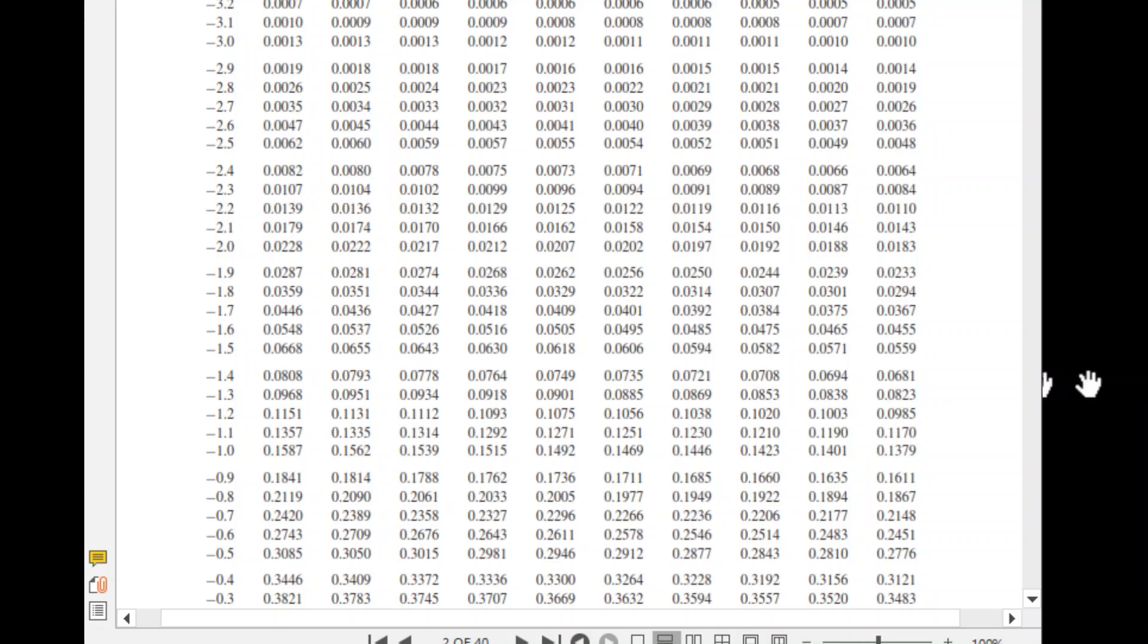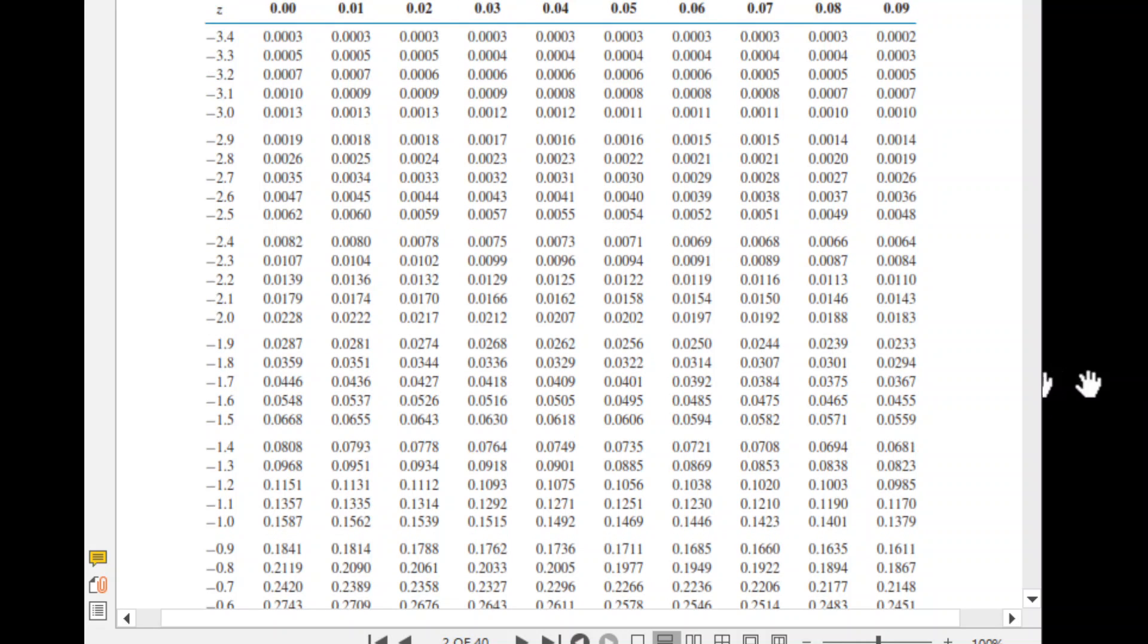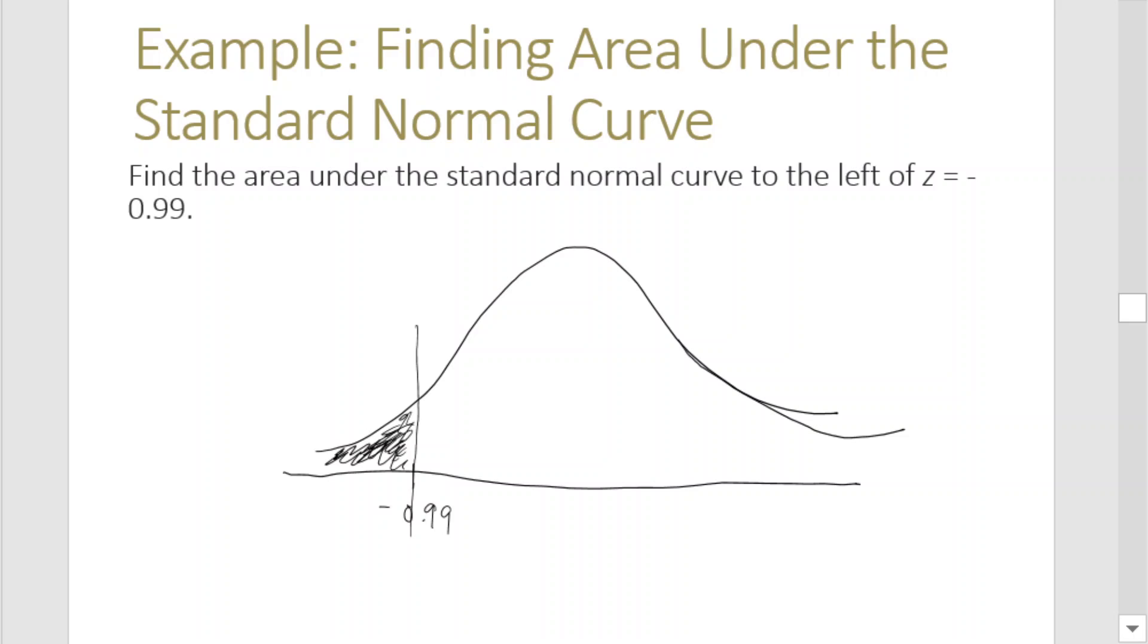So negative 0.9, then we find the second decimal in the top row: negative 0.99, which is equal to 0.1611. So we therefore would say that this area is 0.1611.